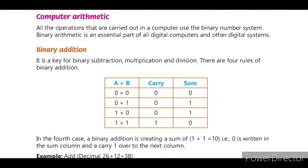First we will see binary addition. In computer arithmetic there are four operations: addition, subtraction, multiplication, and division. Binary addition is a key for binary subtraction, multiplication, and division. There are four rules of binary addition, and it is the key point for performing all other arithmetic operations.